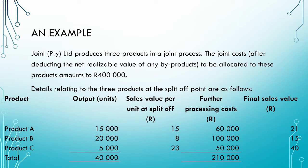Let us work through a small example to see how the physical measures method works. We have a company called Joint that produces three products in a joint process. The total joint costs amount to R400,000. Note that we have already deducted the net realizable value of any byproducts in arriving at this R400,000. Always remember to adjust the joint costs for any byproduct, scrap, and waste before allocating the joint cost to the joint products.